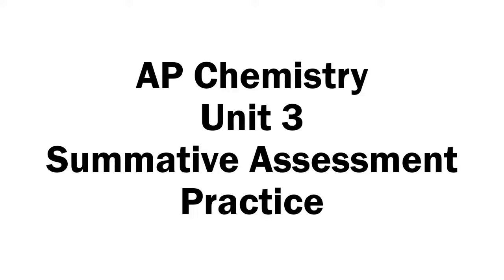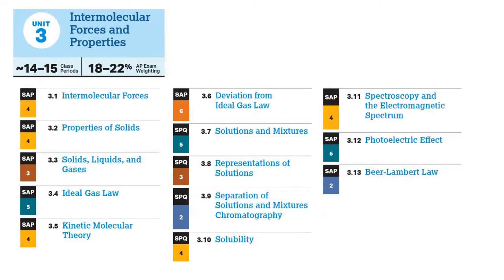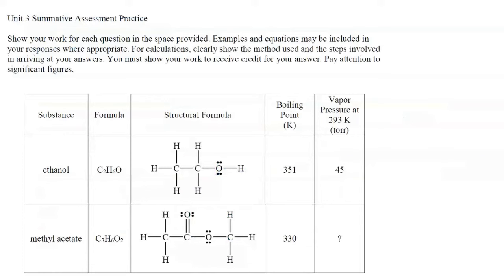These are the answers to the AP Chemistry packet entitled Unit 3 Summative Assessment Practice. On this slide, you can see Unit 3 at a glance. Unit 3 is entitled Intermolecular Forces and Properties. In this video, I will present practice problems that cover all of the topics in Unit 3. This video should help you prepare for the Unit 3 Summative Assessment. In the video description area, there is a link to the AP Chemistry Course and Exam Description, which we call the CED for short, and also a link to the packet that accompanies this video. Okay, let's get started.